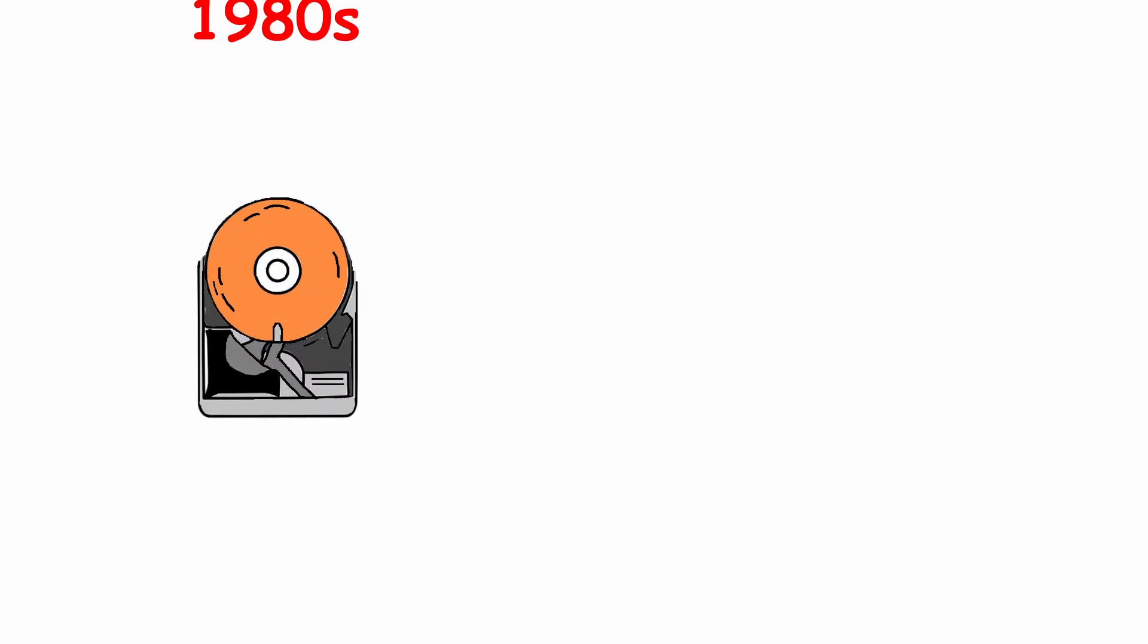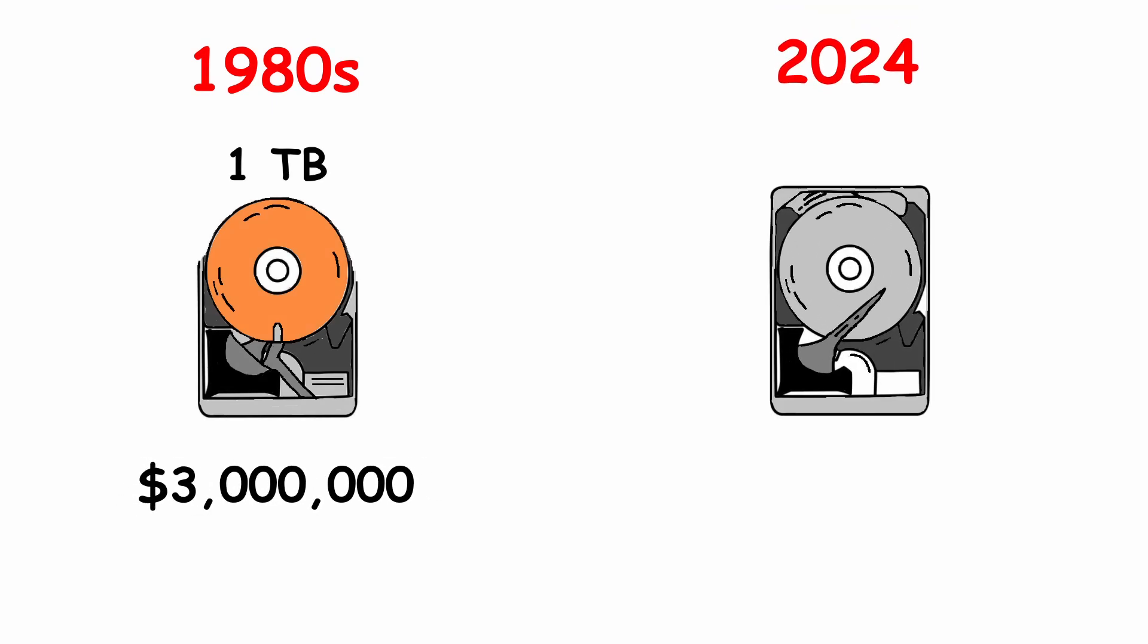When we look at hard drives in the 1980s, a 5MB drive cost $1,500. Meaning, if you had a 1TB drive back in the 80s, it would cost about $3 million. Today, in 2024, that same 1TB drive not only costs less than $50, but is far faster and more reliable than any hardware from the 1980s.